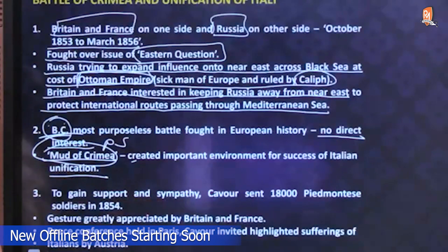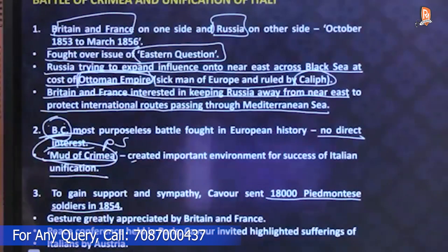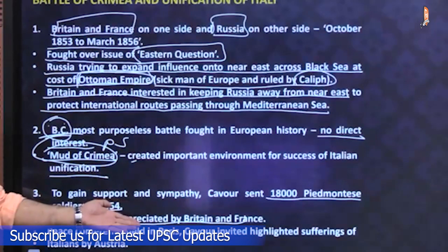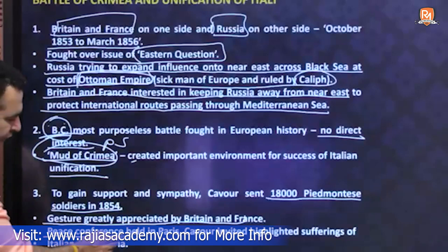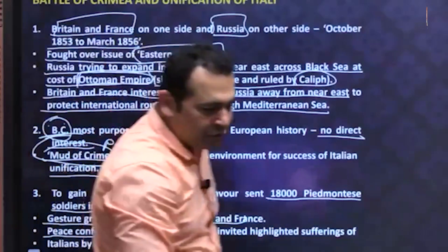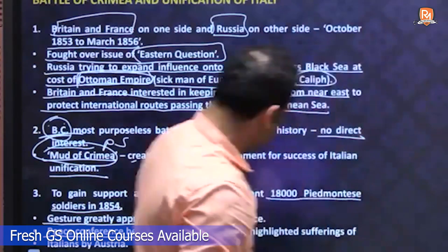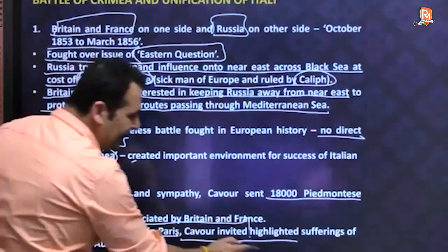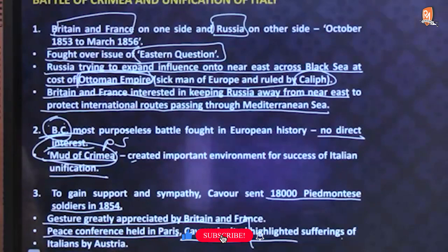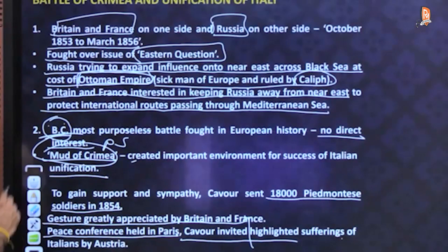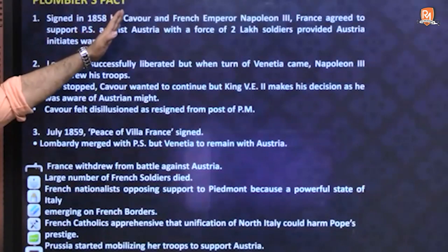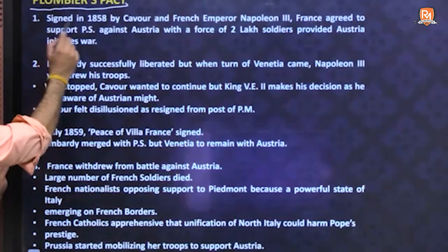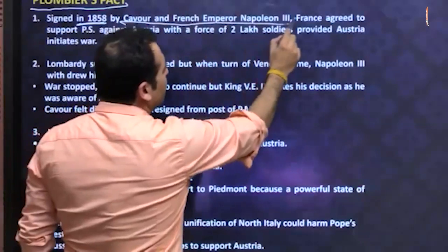This gesture was greatly appreciated. A peace conference was held in Paris, and Cavour was invited. At the conference, he highlighted the sufferings of Italians under the Austrians. A pivotal Plombières Pact was then signed in 1858 by Cavour and French Emperor Napoleon III. France agreed to support Piedmont-Sardinia against Austria with a force of 200,000 soldiers, provided Austria initiated the war.